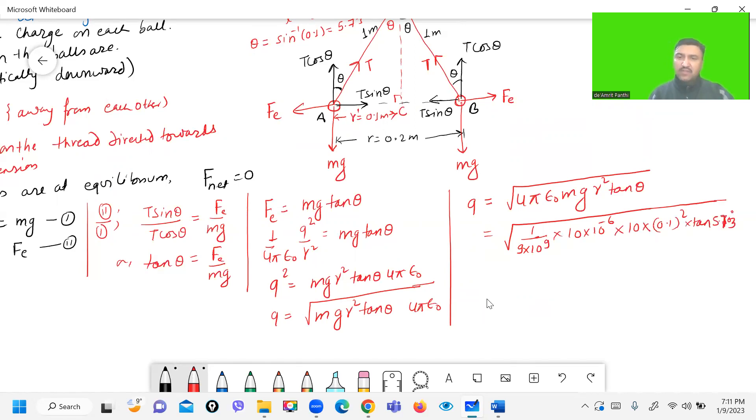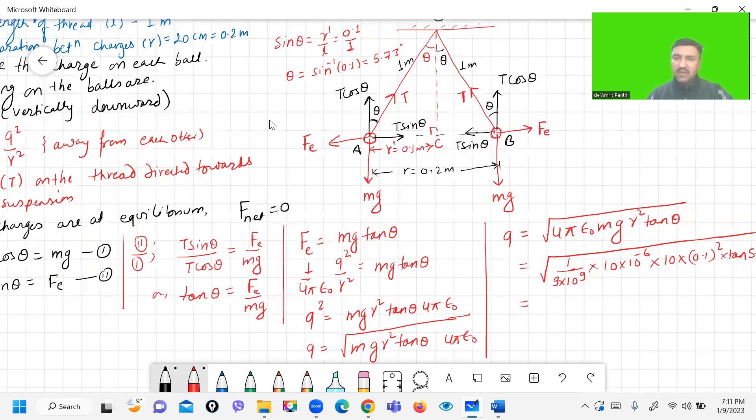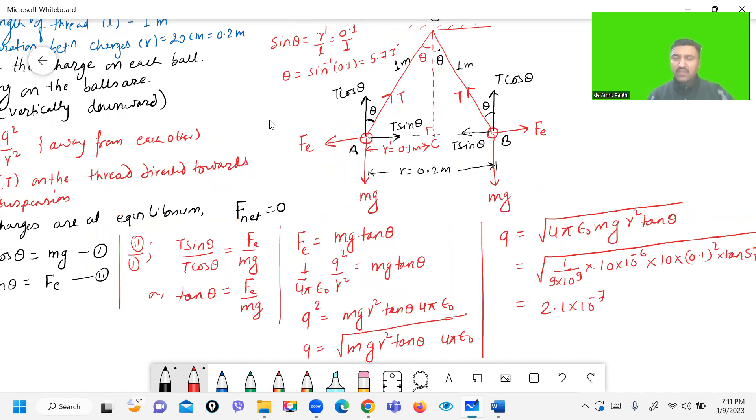So upon solving this, we will get the answer is 2.1 into 10 to the power minus 7. In this way, this problem is solved.